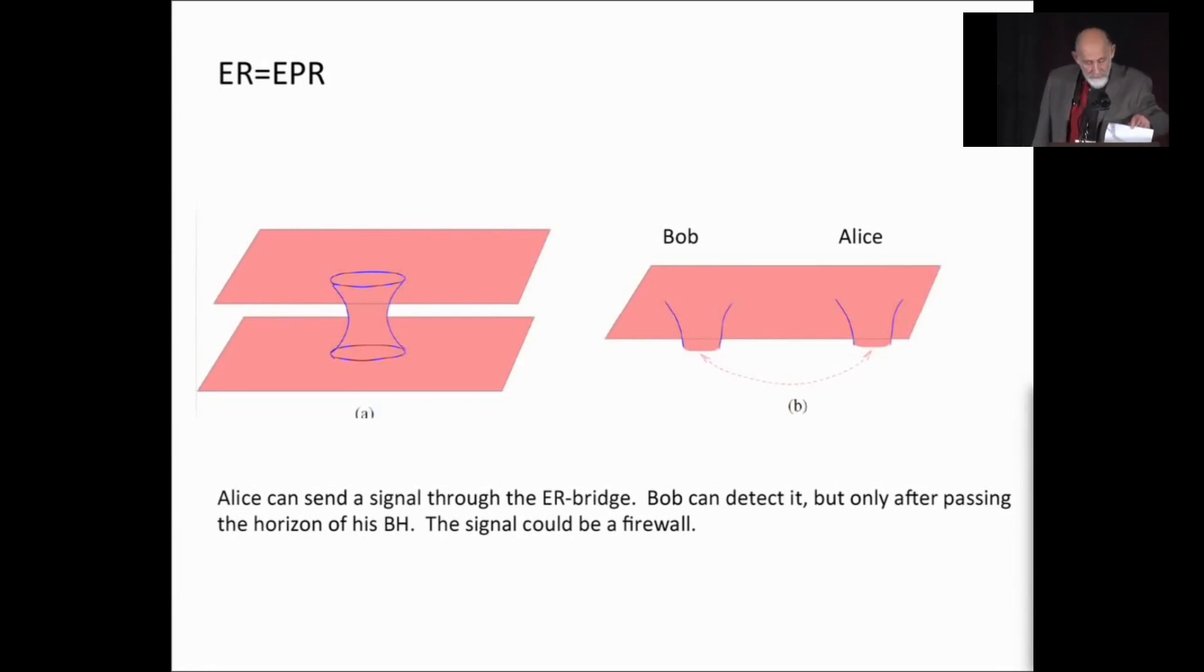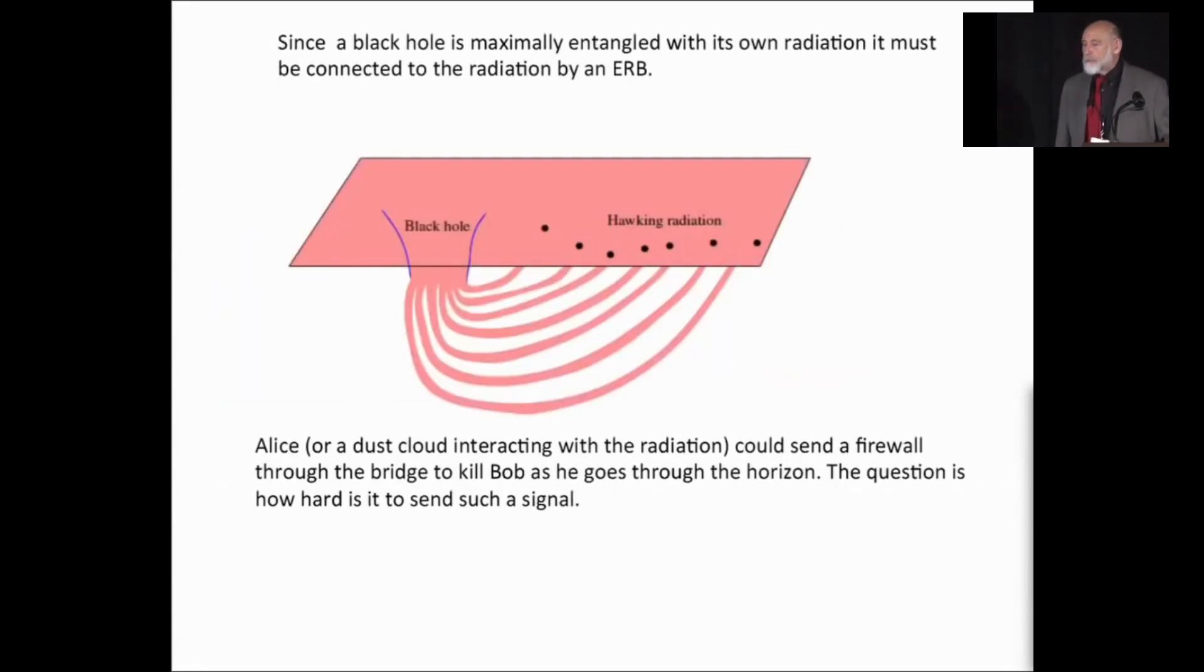So, that's the setup. That's the situation. Now, let me come to the AMPS paradox, the paradox of firewalls, which I do think is a very deep and important paradox. I don't think the answer is what AMPS said, but I think the paradox is deep and important, and whatever the answer is, I think it's going to be something very, very deep. The problem that AMPS addressed is what happens when... That's the Einstein-Rosen bridge that connects the black hole to its own radiation.